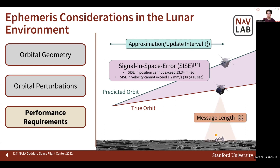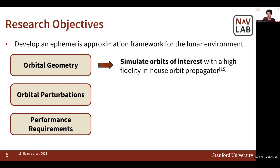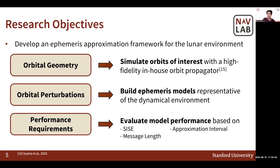Furthermore, we should also consider the message length of a broadcasted ephemeris. The shorter the message in terms of bits, the quicker the user can decode and obtain satellite ephemeris for localization, which is the ideal case. In this research, we develop an ephemeris approximation framework for the lunar environment that accounts for these three considerations. We simulate orbits of interest with a high-fidelity in-house orbit propagator, build ephemeris models representative of the dynamic environment, and evaluate the models based on the three performance metrics outlined.